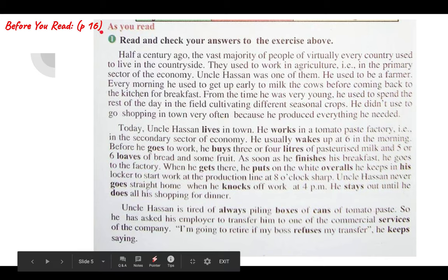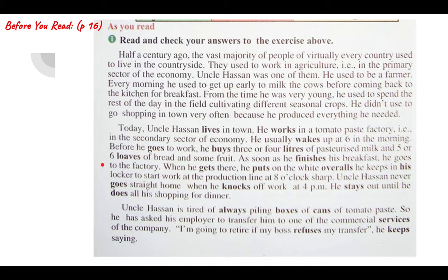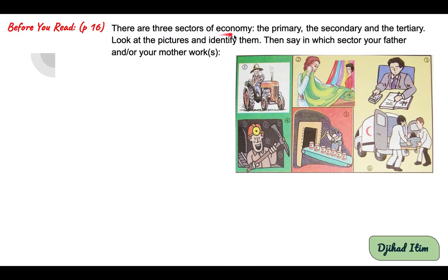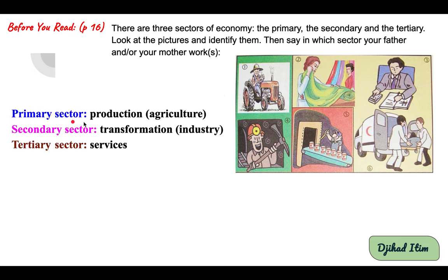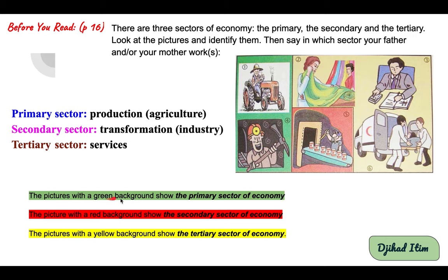Before you read, page 16: you can read the text and then answer the questions and do the activities. There are three sectors of economy — the primary, the secondary, and the tertiary. Look at the pictures and identify them, then say in what sector your father or mother works.